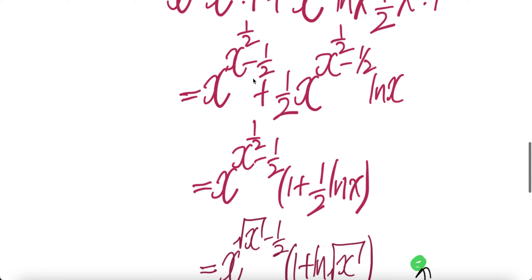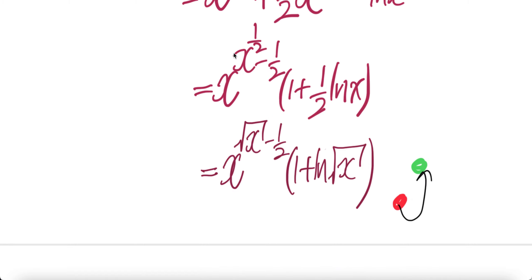And pull out common term. Then you have one for this, and then half ln x for this. And then write x to power half as √x. And then move this inside, you get x to power half, which is √x, done.